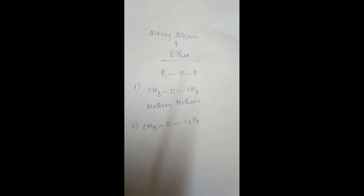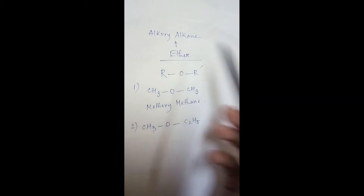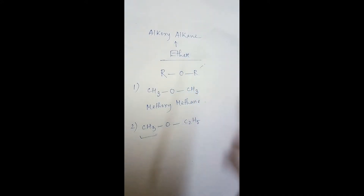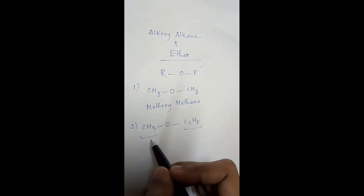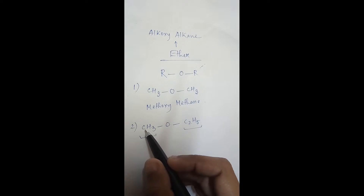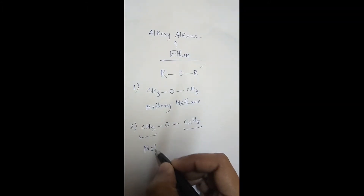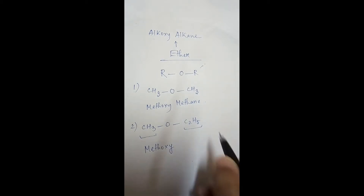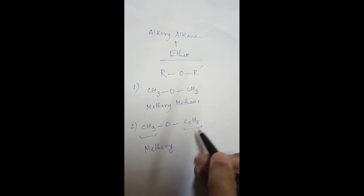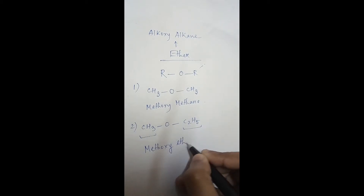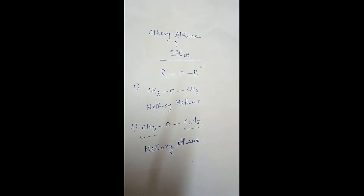The alkoxy part will be the smaller hydrocarbon chain, and the alkane part will be the longer hydrocarbon chain. This methyl group has only one carbon atom, so it is the alkoxy part — we write methoxy. The ethyl group has two carbon atoms, so it is the alkane part. So the full name is methoxyethane.